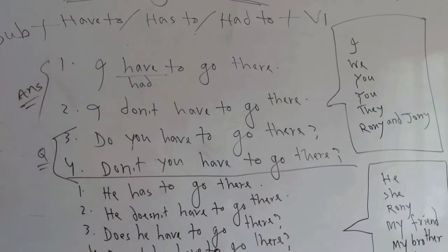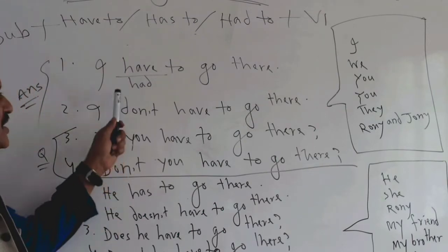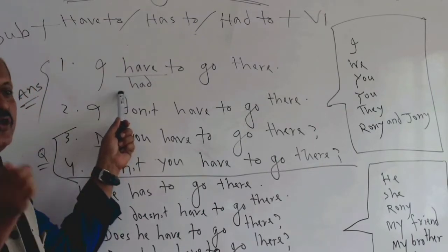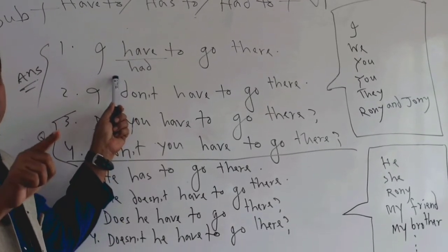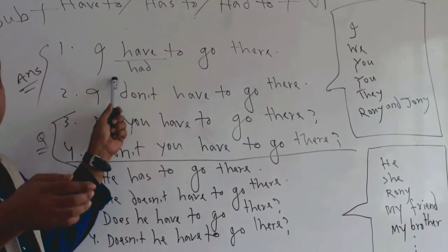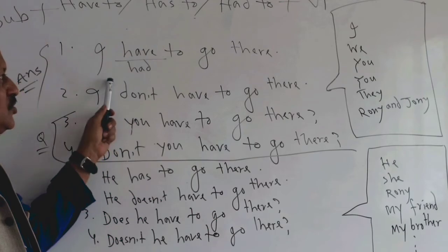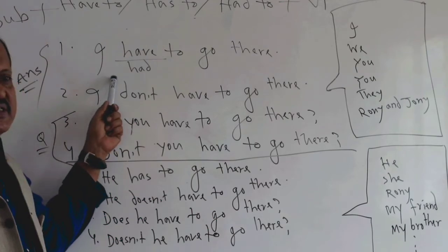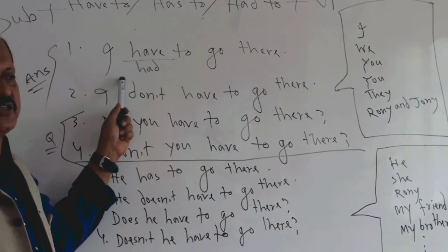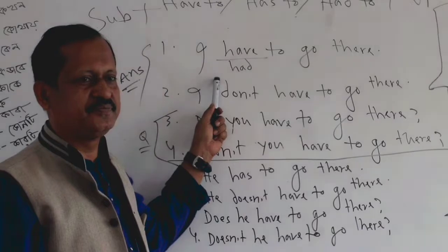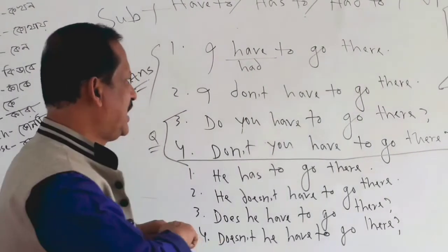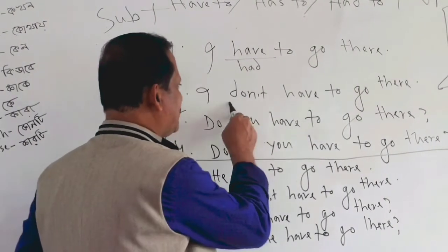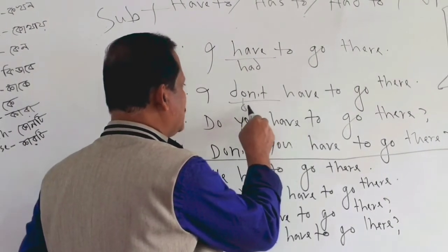Now I will keep habits in mind and then we will get to 'had to.' 'I had to go there' — this is the past form. 'We have to go there. You have to go there. I have to go there.' When we use the past tense of obligation, we say 'had to.'